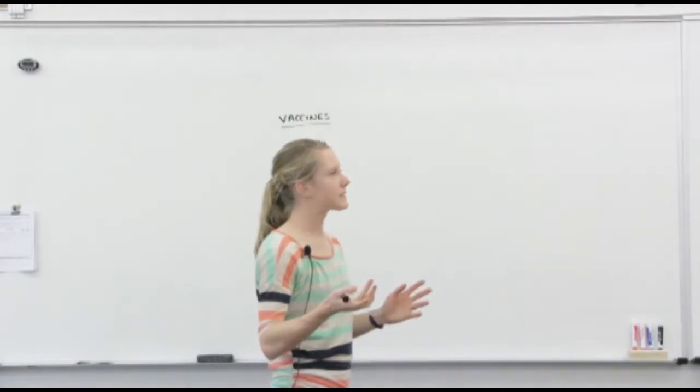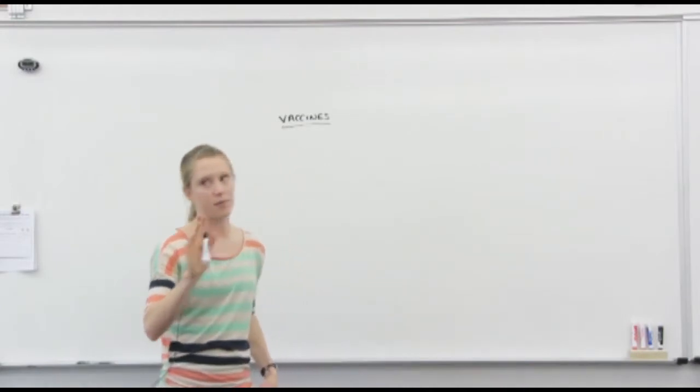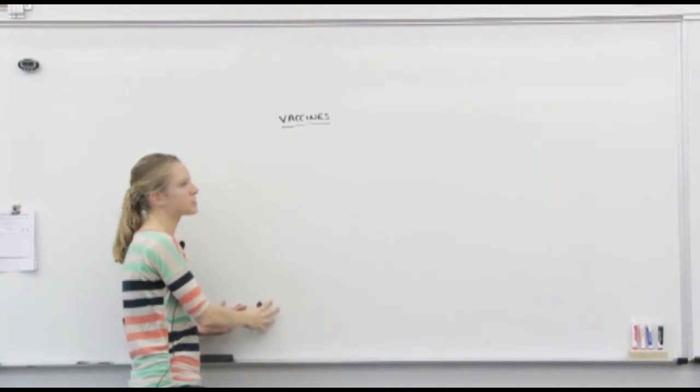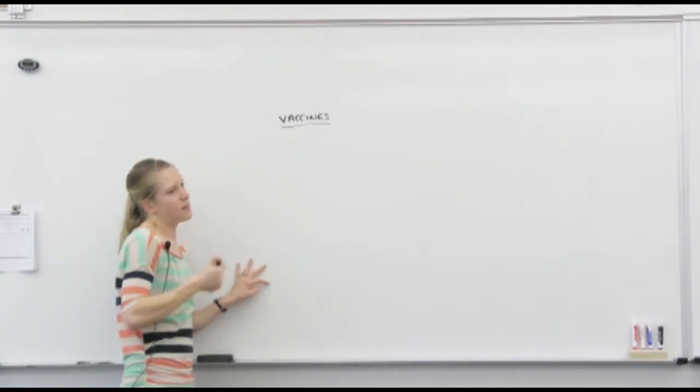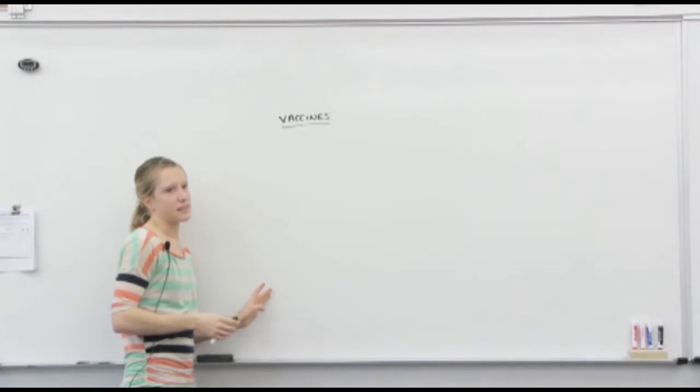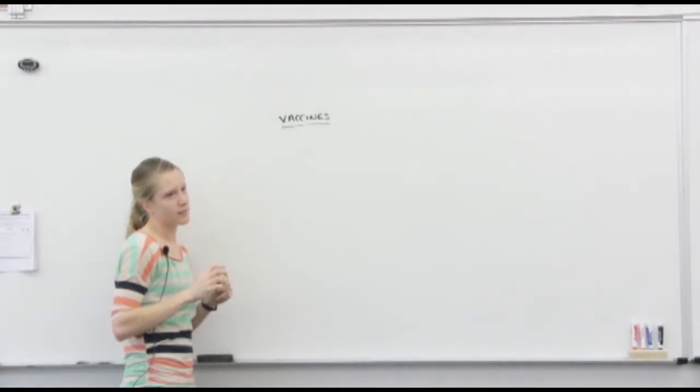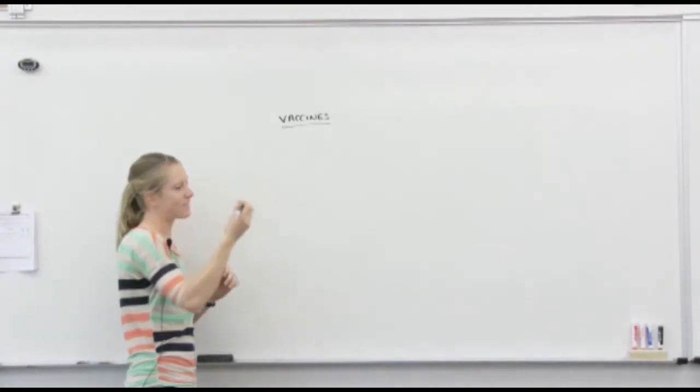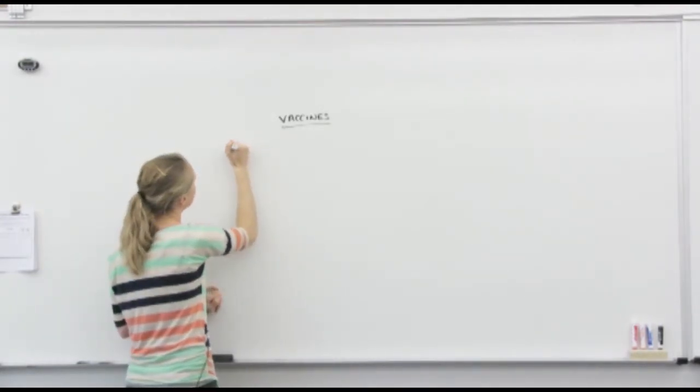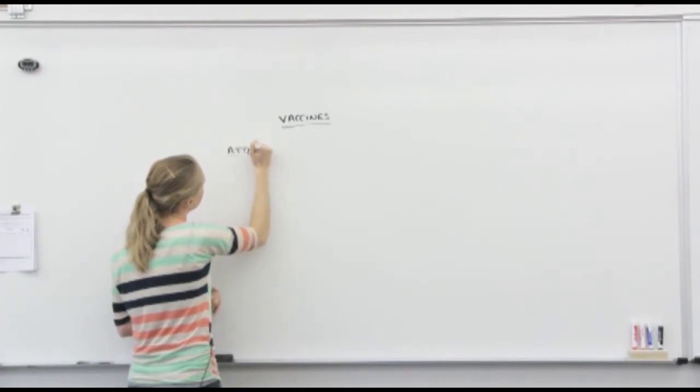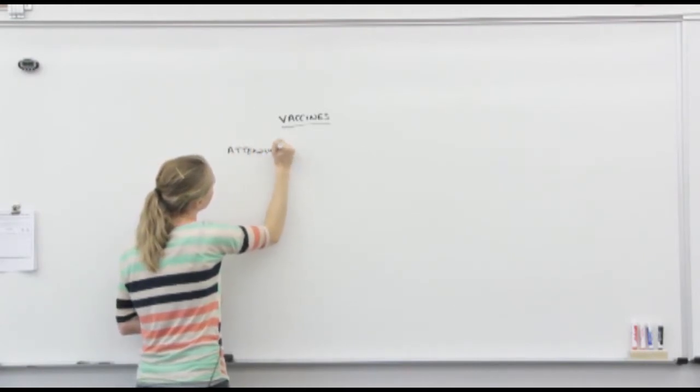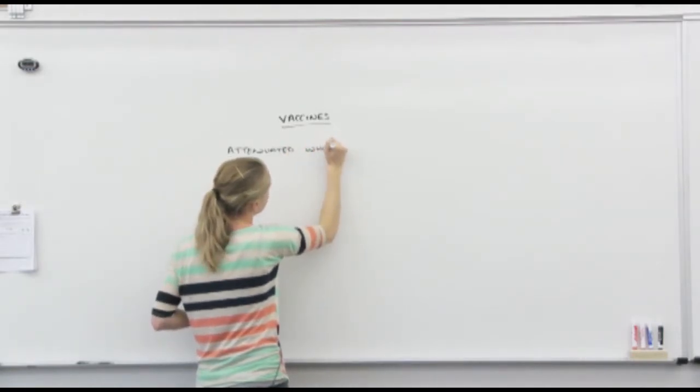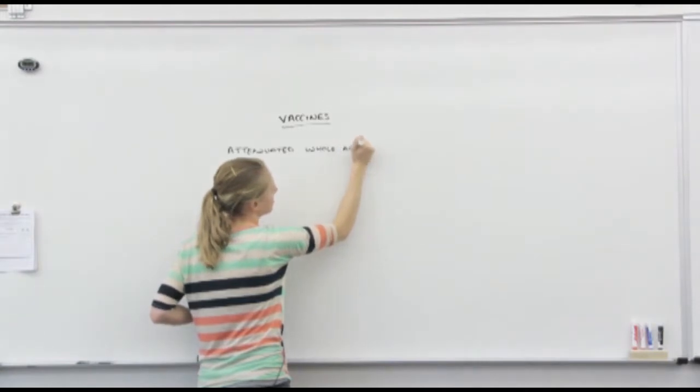They're based on the disease and so you need to know them for your diseases this week for this test. There are a bunch of different kinds of vaccines - we look at the disease and we pick the best one for that disease. So what's one of the options? Attenuated whole agent. Another vocab lesson - what's attenuated mean? Weakened. What do you think whole agent means?